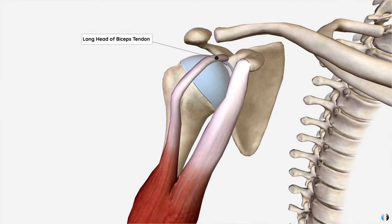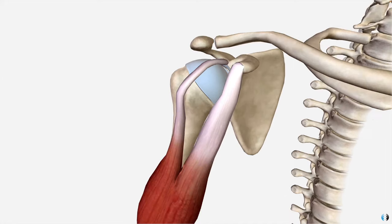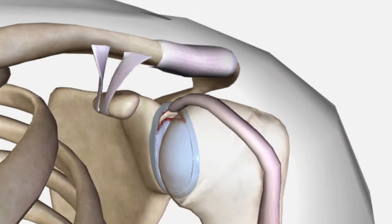This improves the stability of the glenohumeral joint whilst also maintaining large amounts of mobility. The long head of biceps tendon attaches to the supraglenoid tubercle — a tubercle superior to the glenoid — but it also partially attaches to the superior ring of the glenoid labrum. It is said that the tendon anchors itself to the labrum. Therefore when some patients have a significant trauma involving the long head of biceps tendon, it can pull the anchor out of the glenoid labrum, resulting in a SLAP tear.